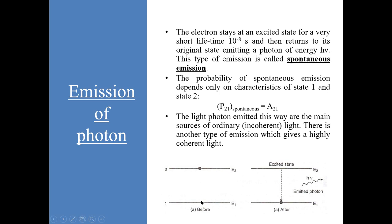Once a photon is absorbed and the electron has reached its excited state, it cannot remain there for a long time. After a very short lifetime of about 10⁻⁸ seconds, it returns to its original ground state, and the energy difference it had absorbed is emitted by it. This emission is known as spontaneous emission, and for this to happen there is no need of any external stimulant. The probability of spontaneous emission does not depend on external conditions; it depends only on the characteristics of the two energy states, and so it is constant. That constant is represented by A21, known as Einstein's coefficient of spontaneous emission. The light photons emitted in this way are the main source of ordinary light.